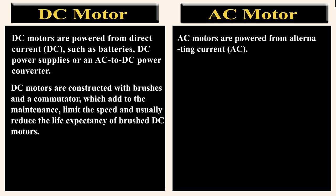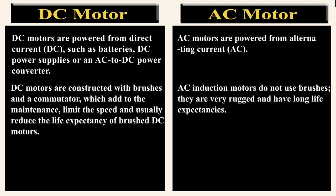DC motors are constructed with brushes and a commutator, which add to the maintenance, limit the speed, and usually reduce the life expectancy of brushed DC motors. AC induction motors do not use brushes — they are very rugged and have a long life expectancy.